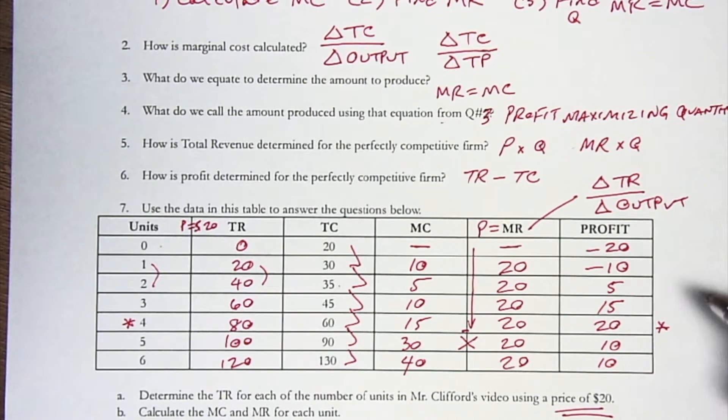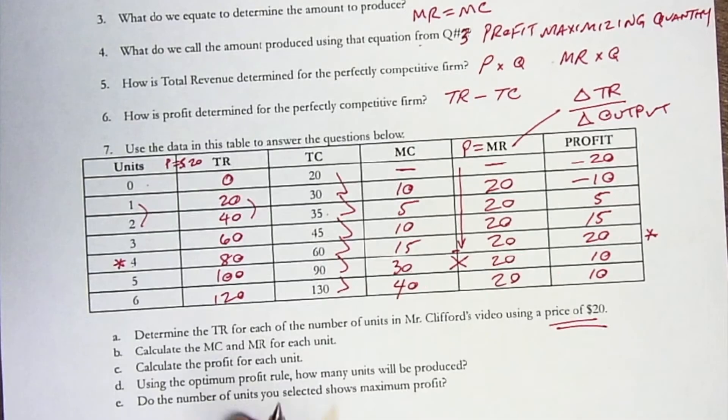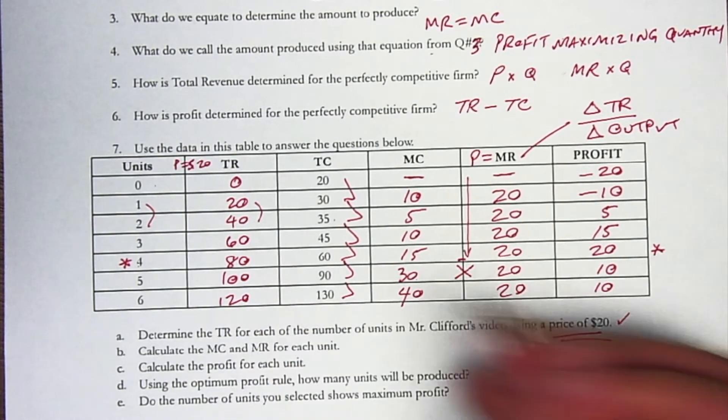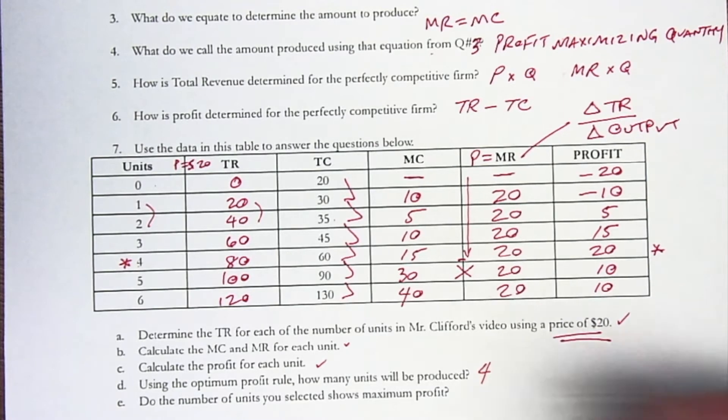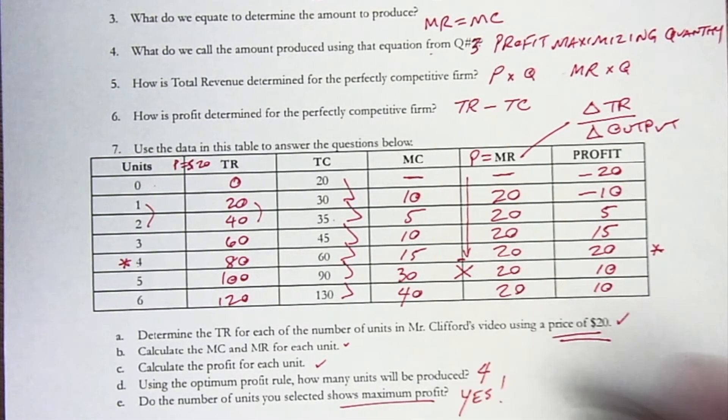And lo and behold, just through comparing where marginal cost and marginal revenue are as close as we could get without marginal cost going over, we get to profit maximizing quantity of 4. We've already done that. We've done TR. How many units will be produced? 4. And do the numbers you selected show maximum profit? Yes, they do.